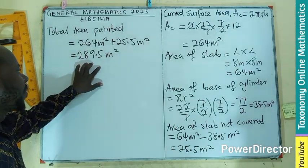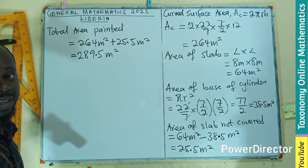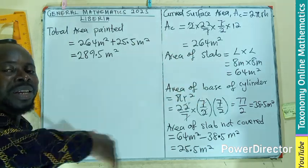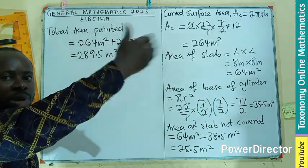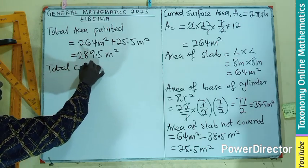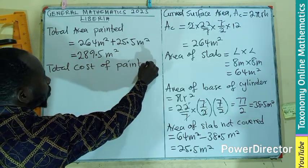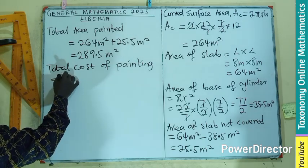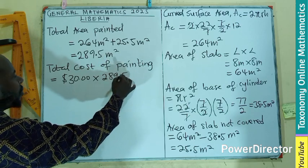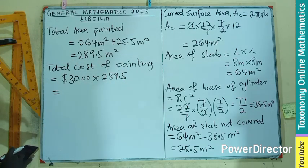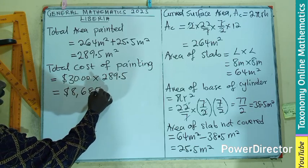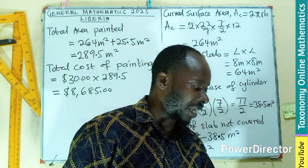Now we know the total area covered. We need to know the cost of painting when one square meter is $30. If I'm painting 289.5 square meters, it means I'm doing 30 into this number of places. Total cost of painting is $30 per square meter times 289.5 meters. If you multiply that, we should be having $8,685.